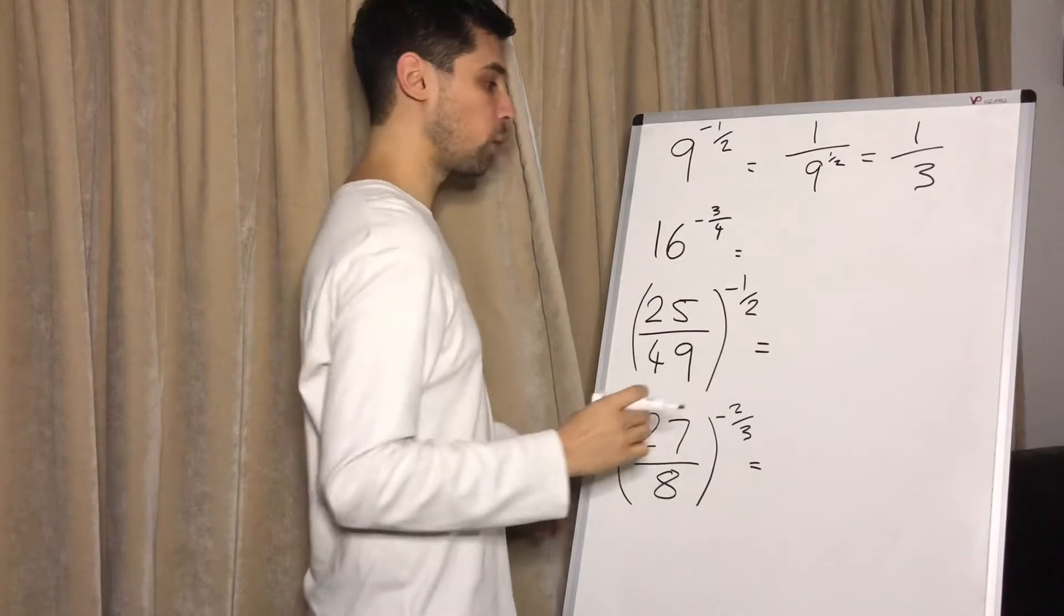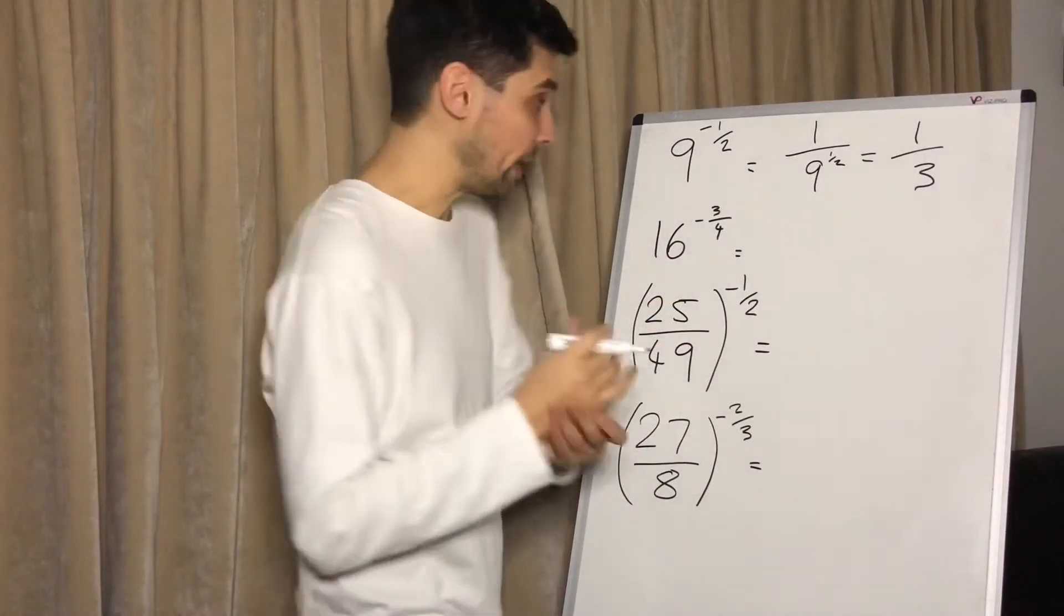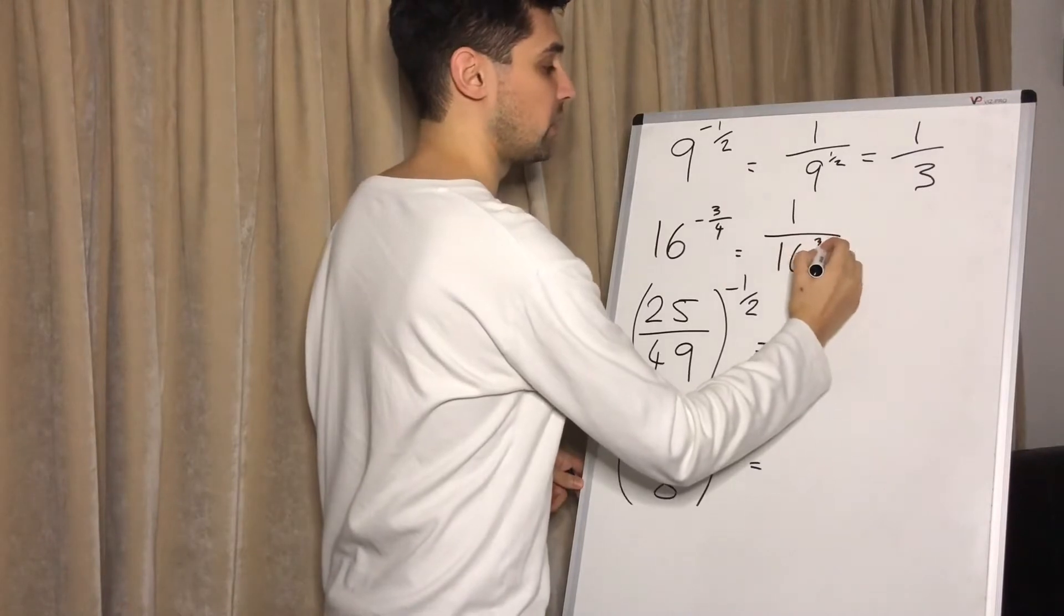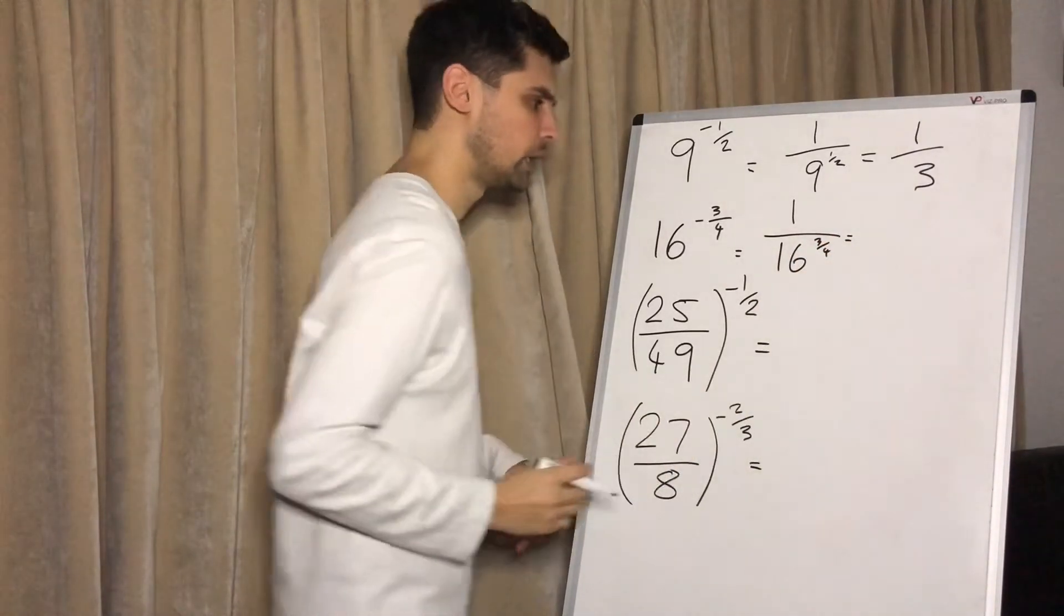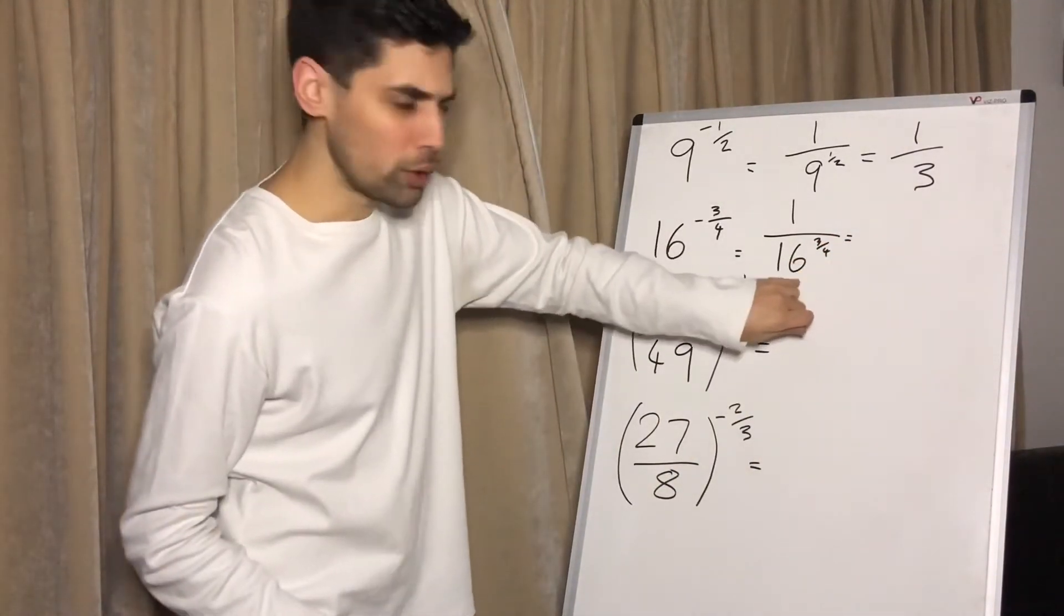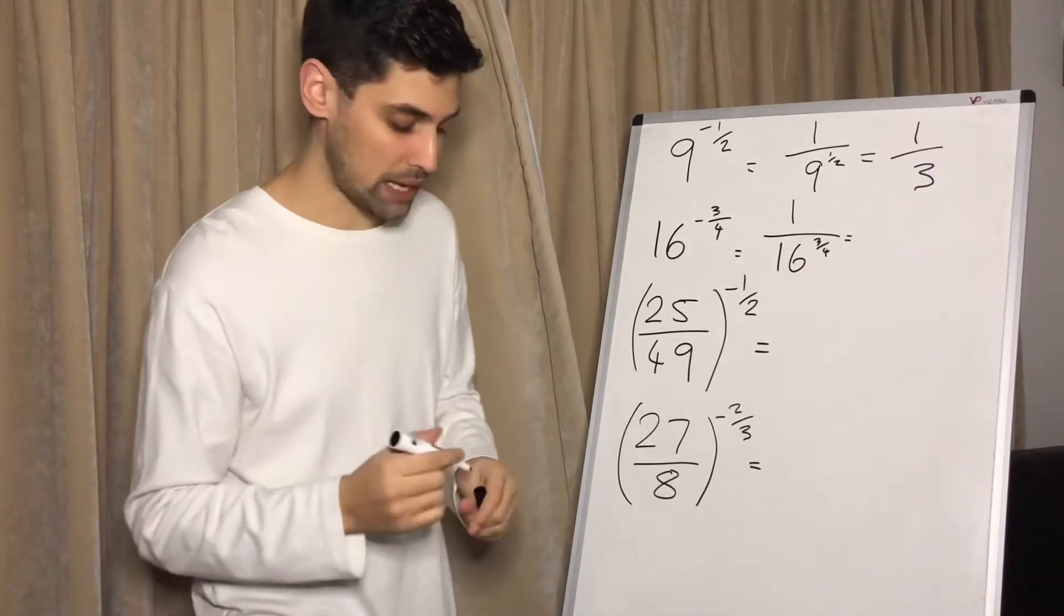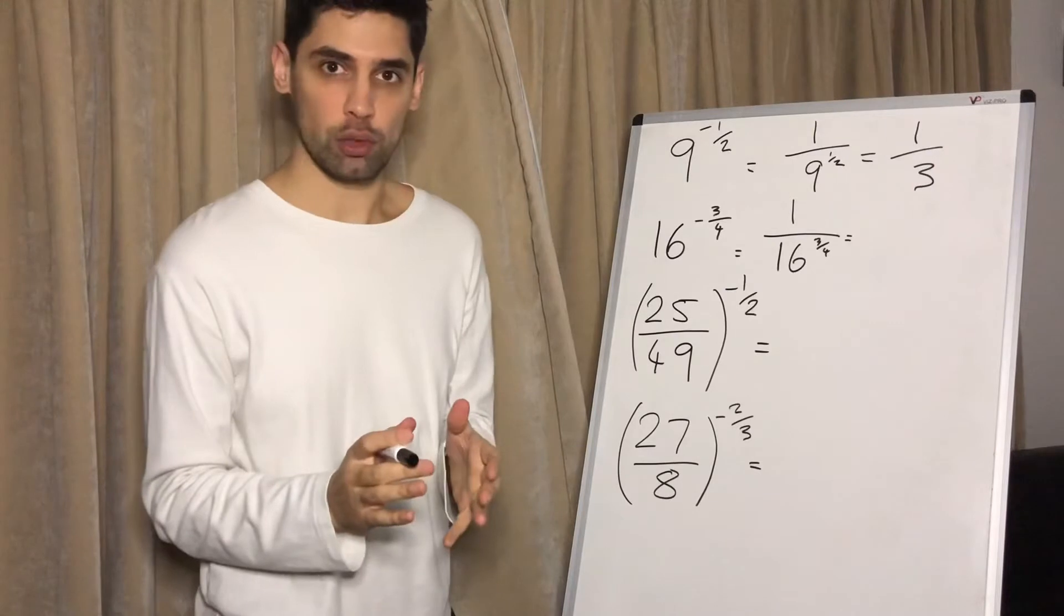Here, 16 to the minus three quarters. We deal with the negative straight away. One over 16 to the three quarters. Now this means the fourth root of 16 then cubed. What is the fourth root of 16? Now you need to know your powers of two.